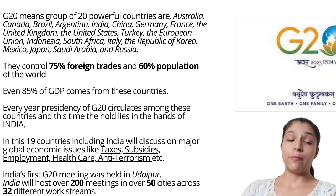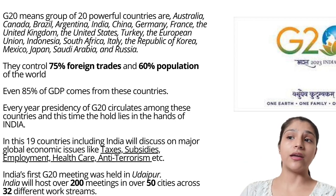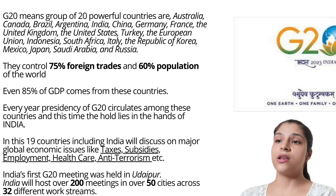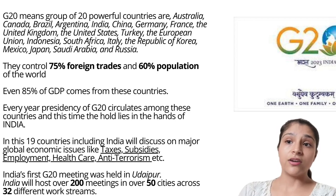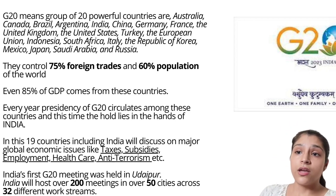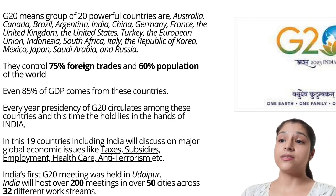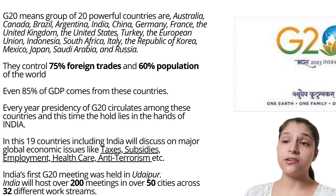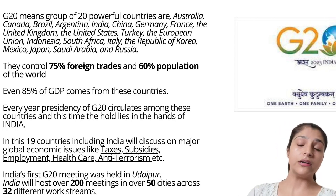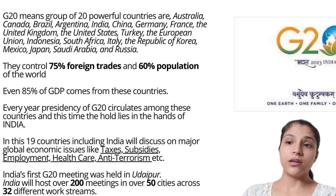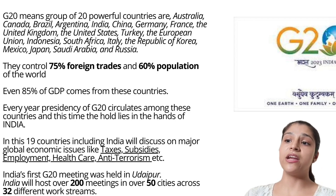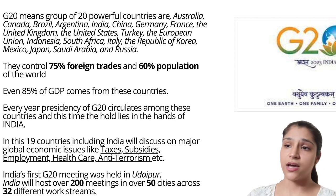G20 is the group of 20 powerful countries, which are Australia, Canada, Brazil, Argentina, India, China, Germany, France, United Kingdom, United States, Turkey, European Union, Indonesia, South Africa, Italy, the Republic of Korea, Mexico, Japan, Saudi Arabia, and Russia. These countries control 75% of foreign trade, 60% of the population of the world, and 85% of GDP comes from these countries.